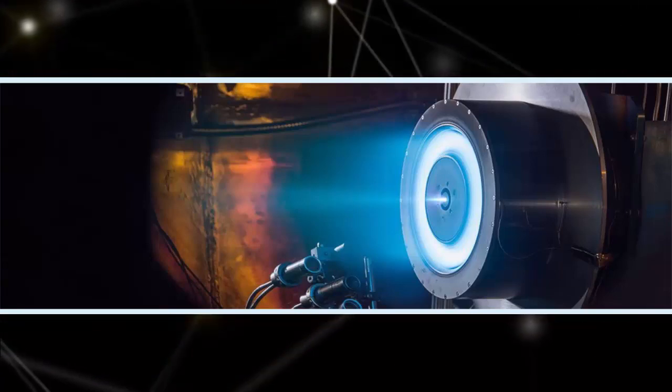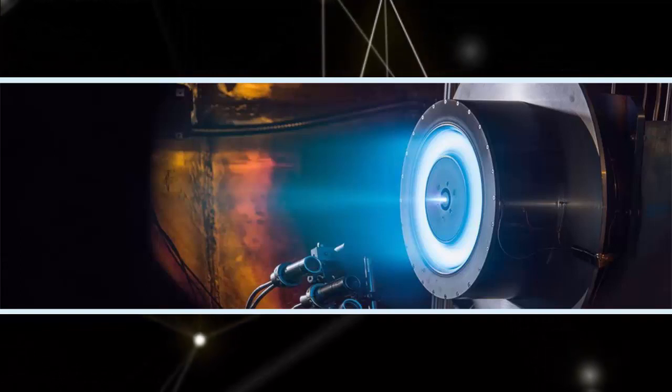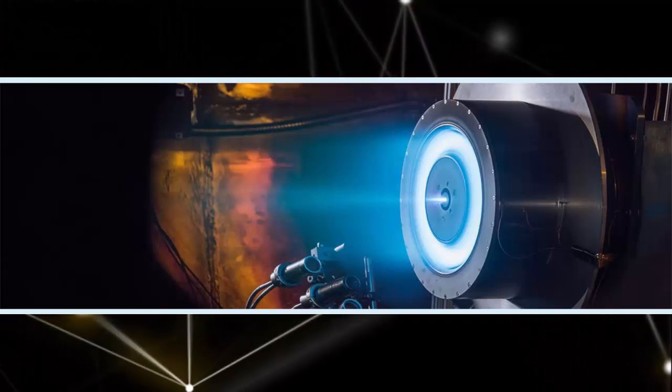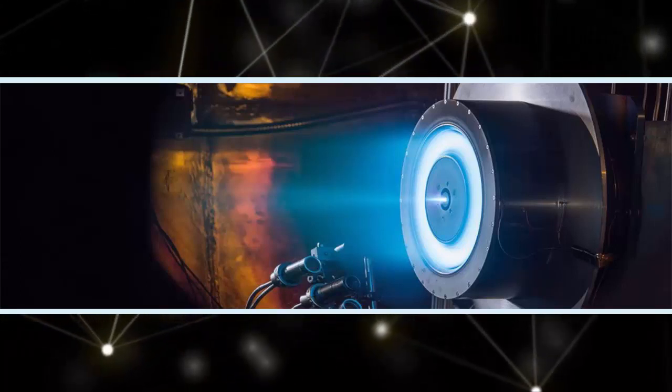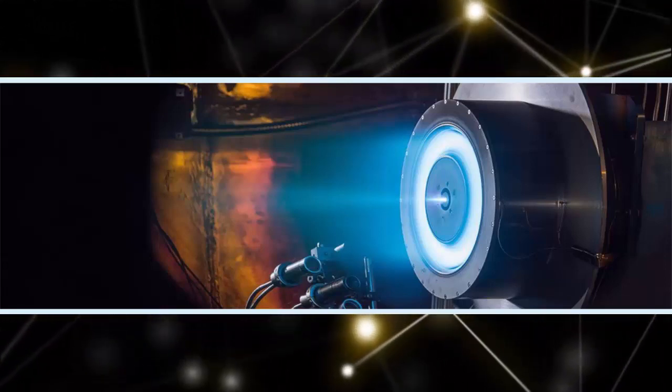A Bussard ramjet, which is a type of fusion rocket, collects diffuse hydrogen in space with a huge scoop, which means, since its fuel is picked up en route, that it could approach light speed.